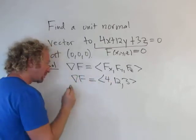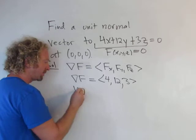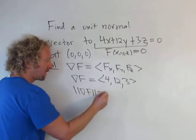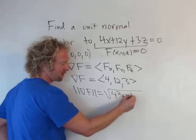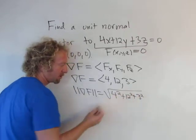So now we want to normalize it. So what we do is we take the magnitude, and so we get 4 squared plus 12 squared plus 3 squared. We square the components in them.